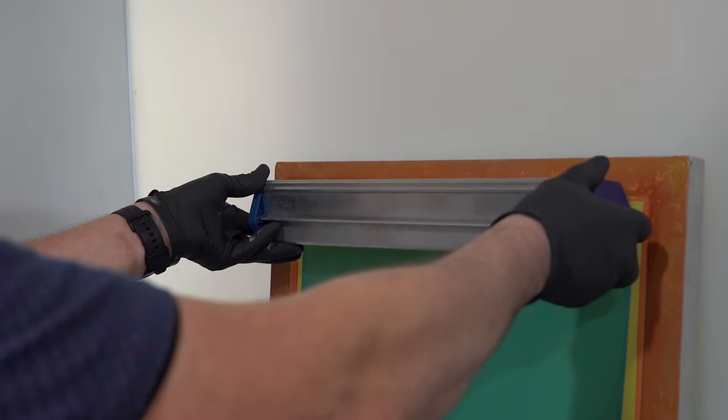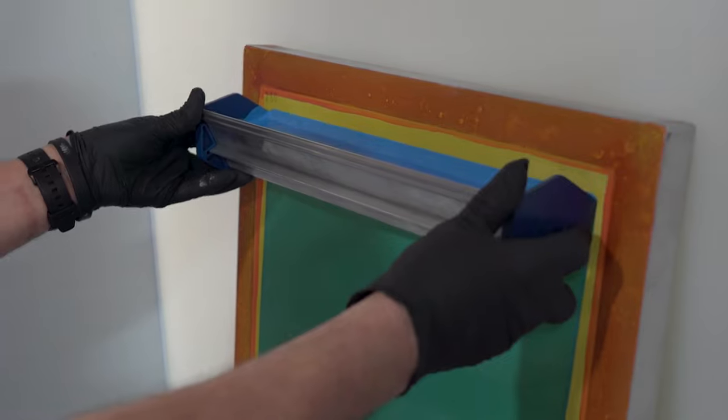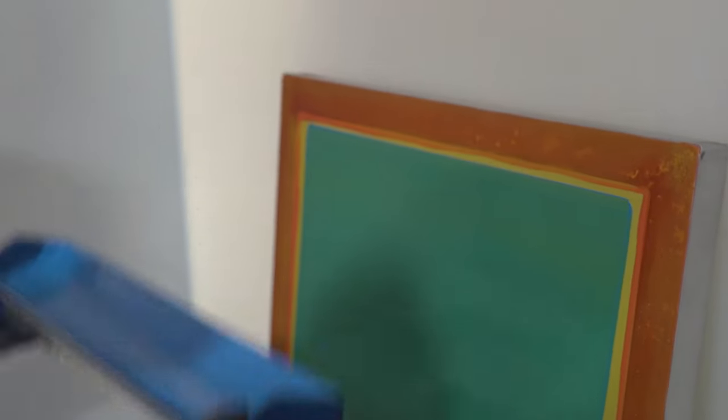When you get to the top of the screen, you want to keep positive contact with the scoop coater to the mesh, then lean the scoop coater back, let the emulsion pour back into the coater and then scrape it off.